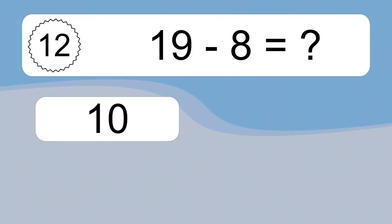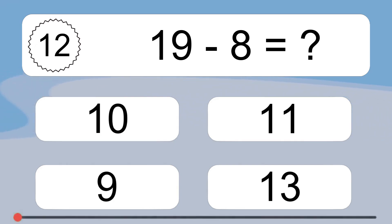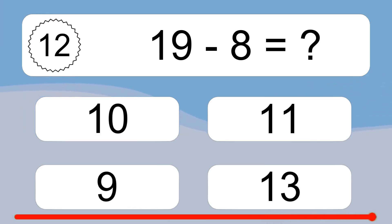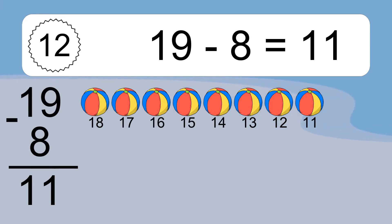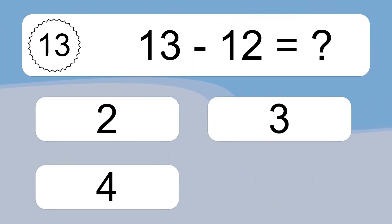19 minus 8 equals what? 19 minus 8 equals 11. Let's count it: 18, 17, 16, 15, 14, 13, 12, 11.